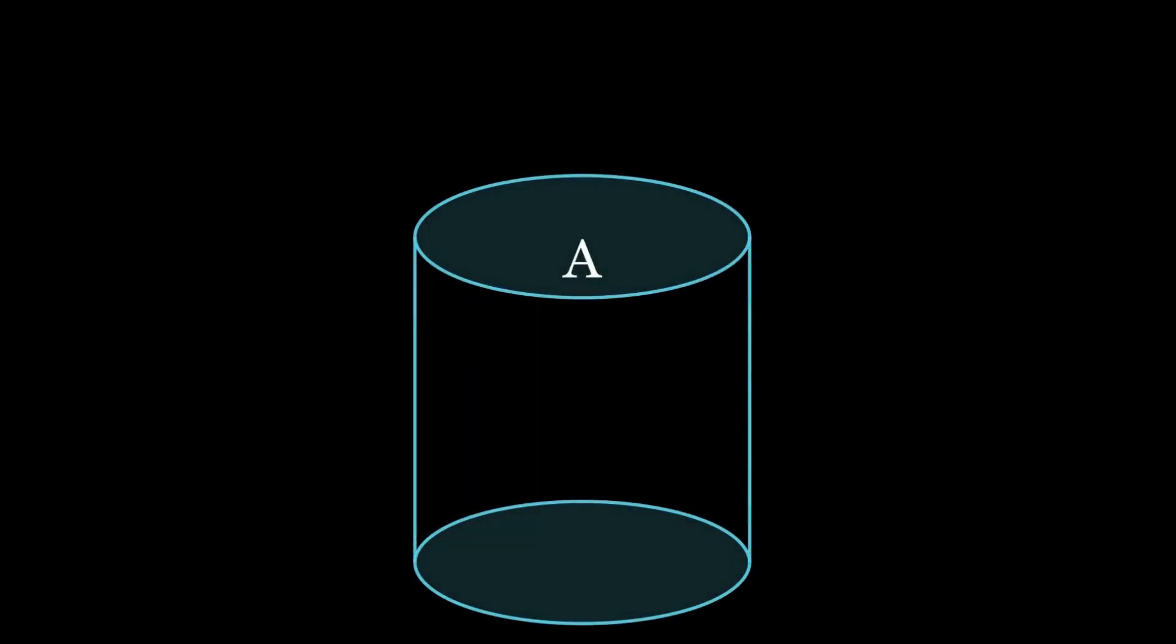Let's say we have a cylinder with an area of its faces called A. Now let's say a fluid with some velocity V passes through this cylinder. The height of this cylinder would be the distance, that is velocity times time. Now the change in volume would be area times height.